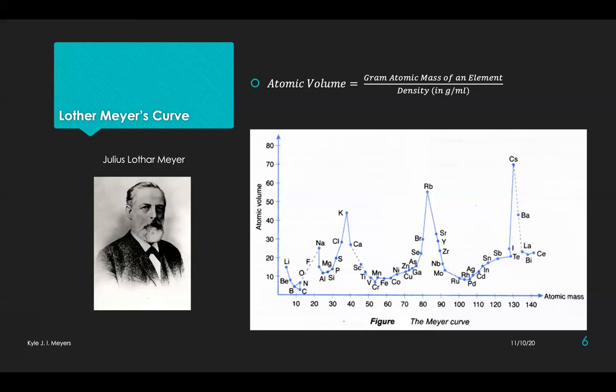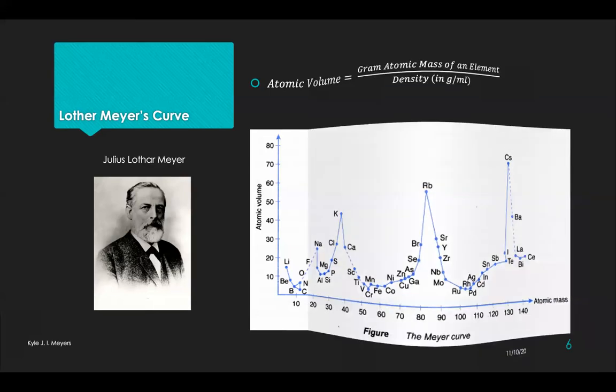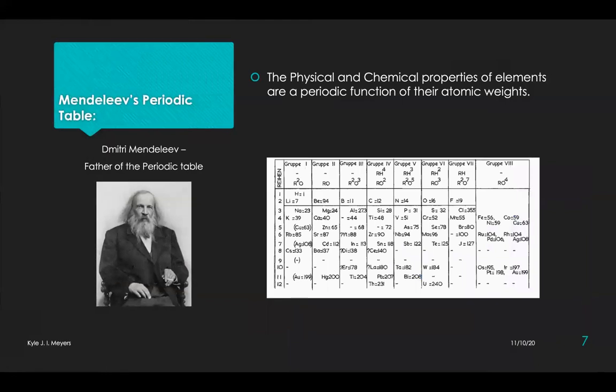We now move to Mendeleev's periodic table. A very surprising news would be that the earliest version of this current form of the periodic table was presented simultaneously by Mendeleev of Russia and Lothar Meyer of Germany. Both the scientists arranged the elements in order of increasing atomic weights and observed that elements with similar properties appeared at regular intervals. Thus, Mendeleev's periodic law stated that the physical and chemical properties of elements are a periodic function of their atomic weights. In 1871, Mendeleev published a short periodic table, which consisted only of 63 elements.